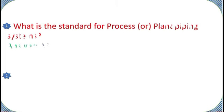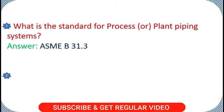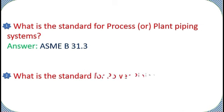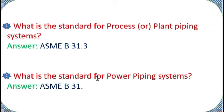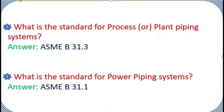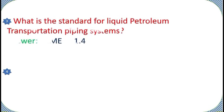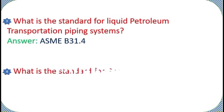What is the standard for process or plant piping systems? Answer: ASME B31.3. What is the standard for power piping systems? Answer: ASME B31.1.